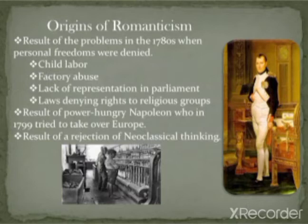Coming to the origins of Romanticism: it arose as a result of problems in the 1780s — personal freedoms were denied, child labor, factory abuse, lack of representation in parliament, and laws denying rights to religious groups. The Romantic movement also emerged as a result of power-hungry Napoleon, who in 1799 tried to take over Europe.